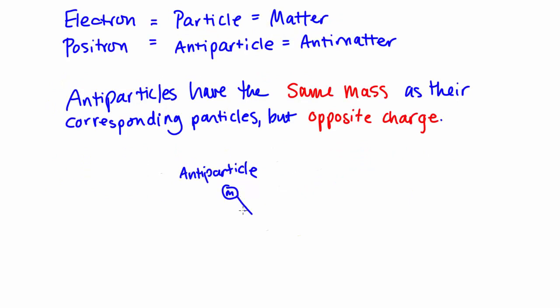If an antiparticle of mass m collides with its corresponding particle, they can annihilate. That is, they can make each other disappear. In their place, they emit two photons, each with an energy equal to m times the speed of light squared.